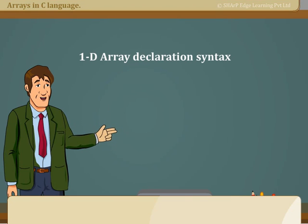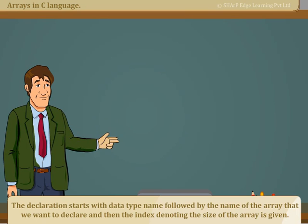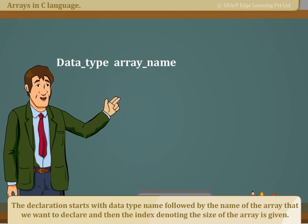1D array declaration syntax. The declaration starts with data type name followed by the name of the array that we want to declare, and then the index denoting the size of the array is given.